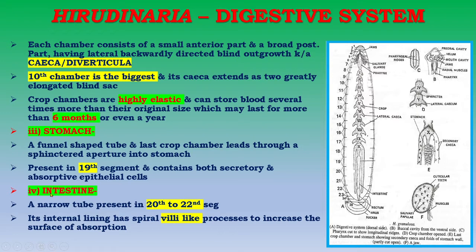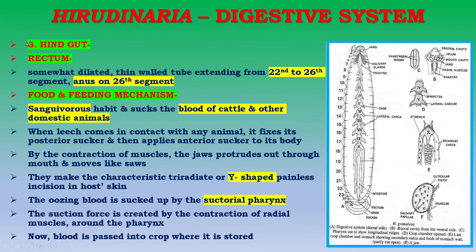The next part of the mesodium is the intestine, which is a narrow tube present in segments 20 to 22. Its internal lining has spiral villi-like processes to increase the surface area of absorption. The hindgut includes the rectum, a somewhat dilated thin-walled tube extending from segment 22 to segment 26, with the anus present on segment 26.